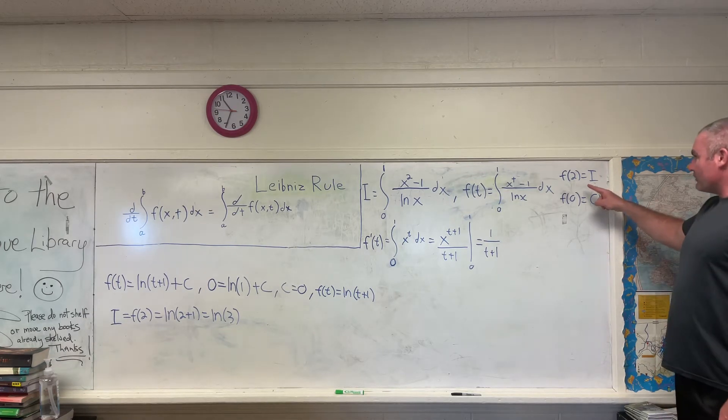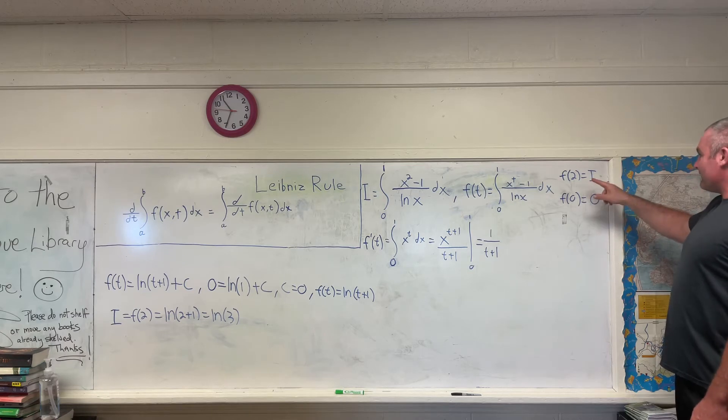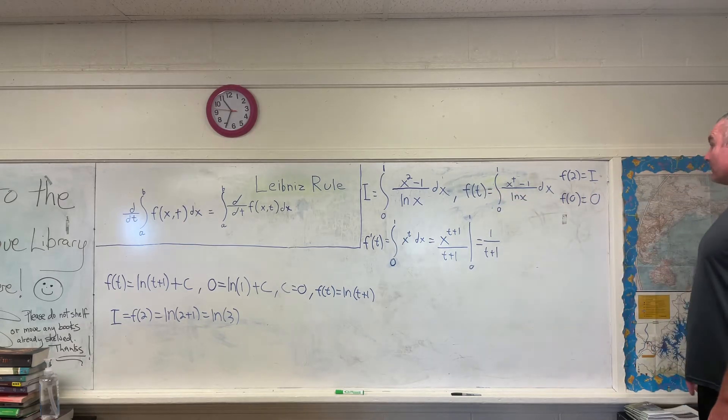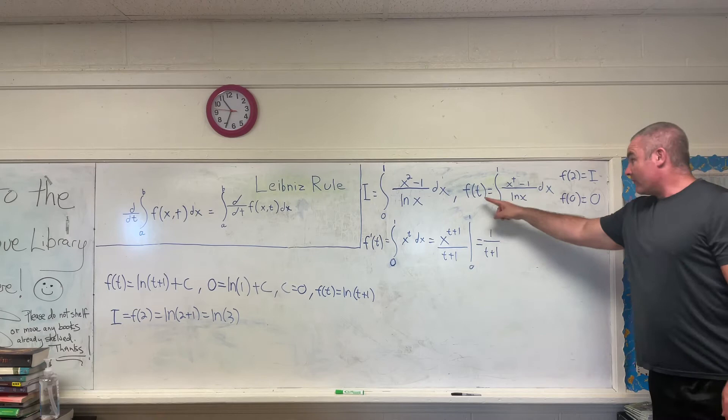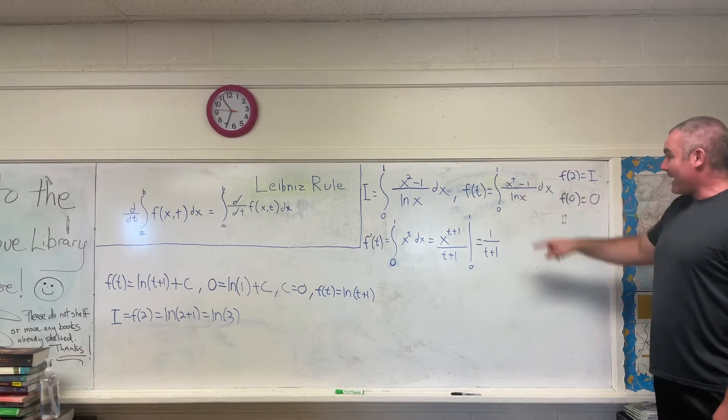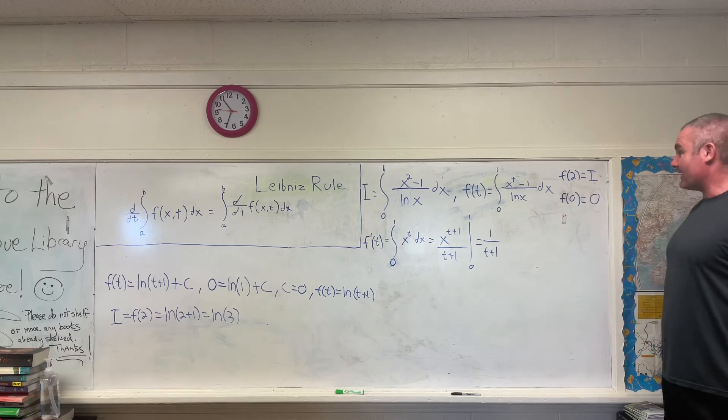A couple other things we need to note on this is that if you evaluate this function of t at t equals 2, you will get our original integral. See, f of 2 would be the integral from 0 to 1 of x squared minus 1 over natural log x dx.